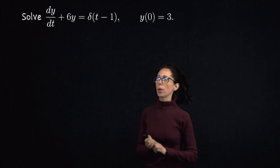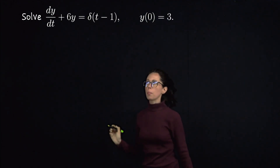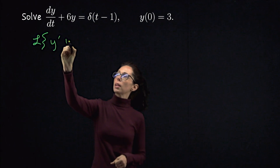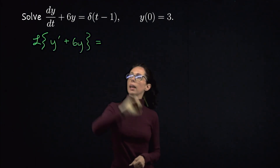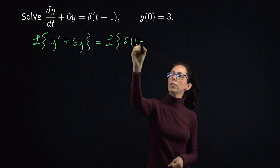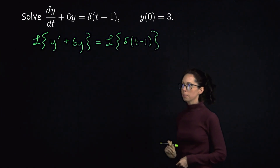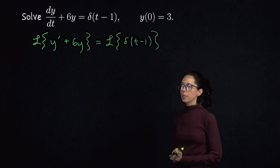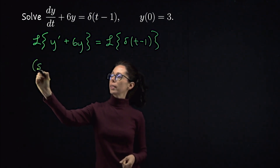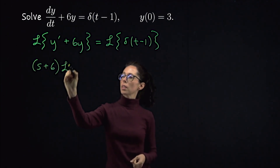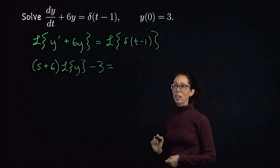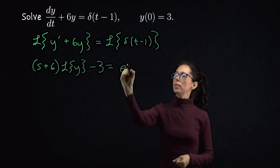Let's see if we can get to that with the Laplace transform. Taking the Laplace transform of both sides: on the left-hand side we have L of y' plus 6y, and on the right-hand side we have the Laplace transform of the Dirac delta centered at 1. We have the initial condition that when t is 0, y is 3. So the left-hand side becomes s plus 6 times the Laplace transform of y minus 3, and the right-hand side is e to the negative s, since a equals 1.